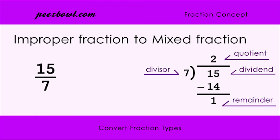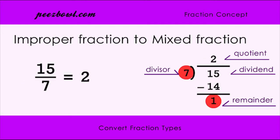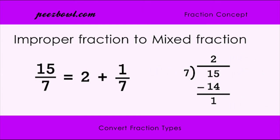Let us write this division in the mixed fraction format. We will write the quotient as it is, then write the division of the remainder and divisor in a fraction format. So we will write it as 2 plus 1 upon 7, which can also be written as 2 and 1 upon 7. Hence, 15 upon 7 will be written as 2 and 1 upon 7 in mixed fraction format.